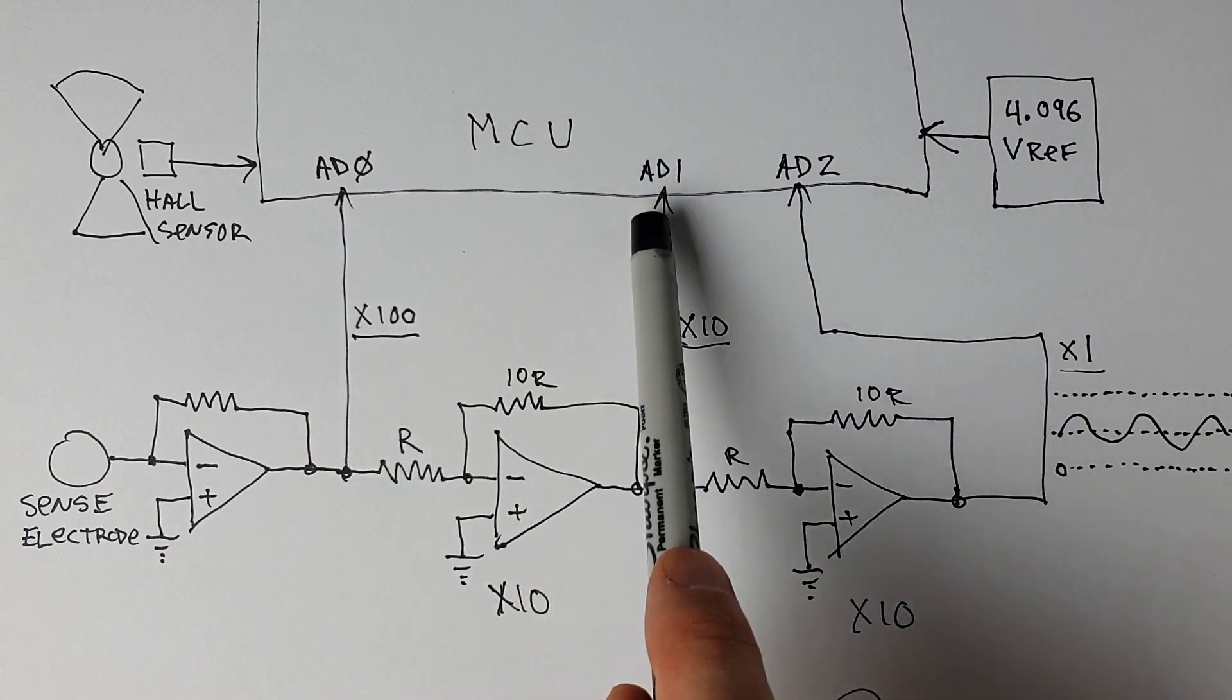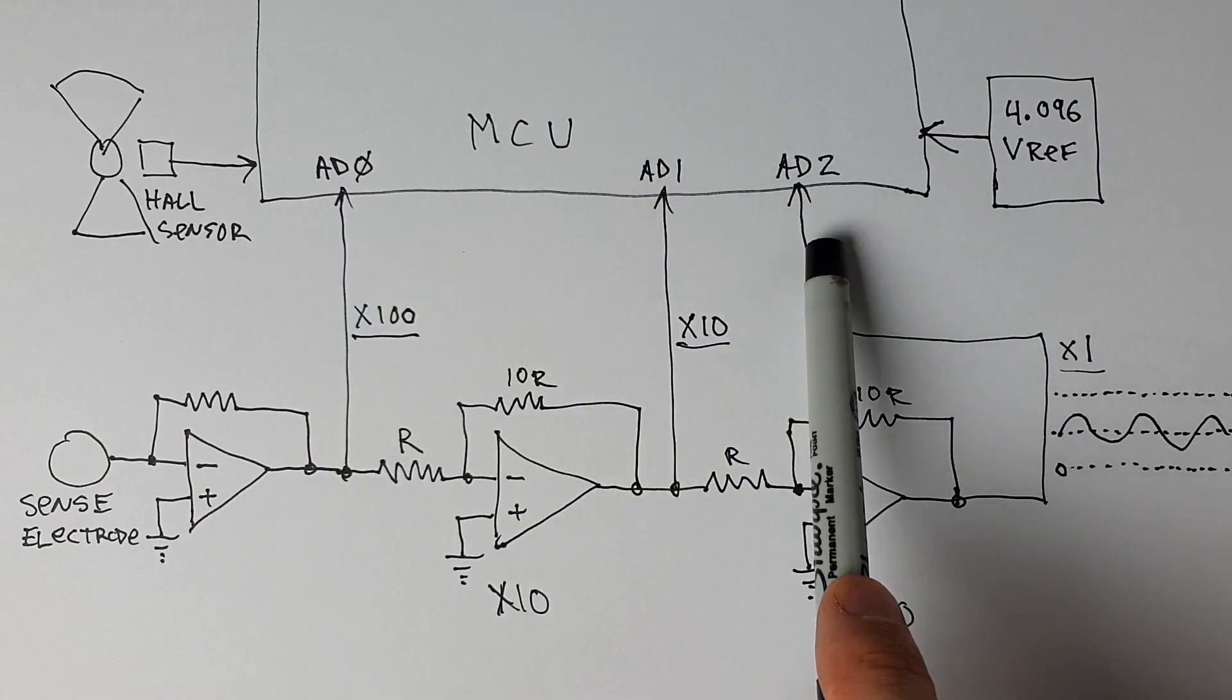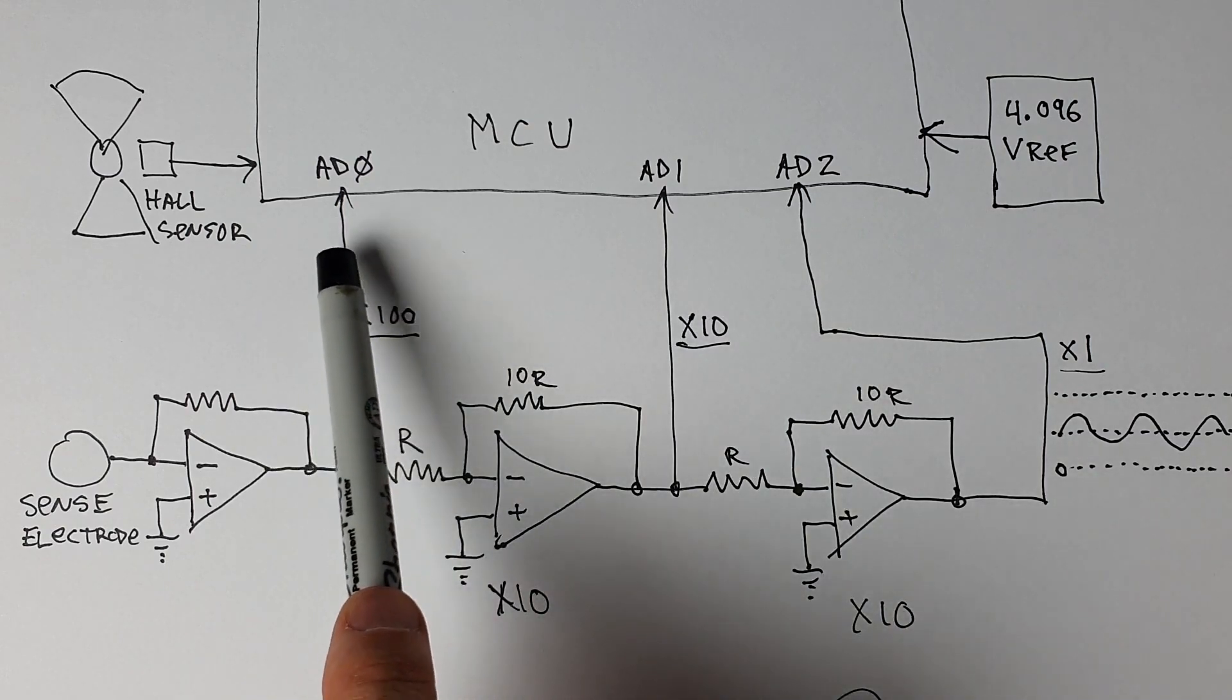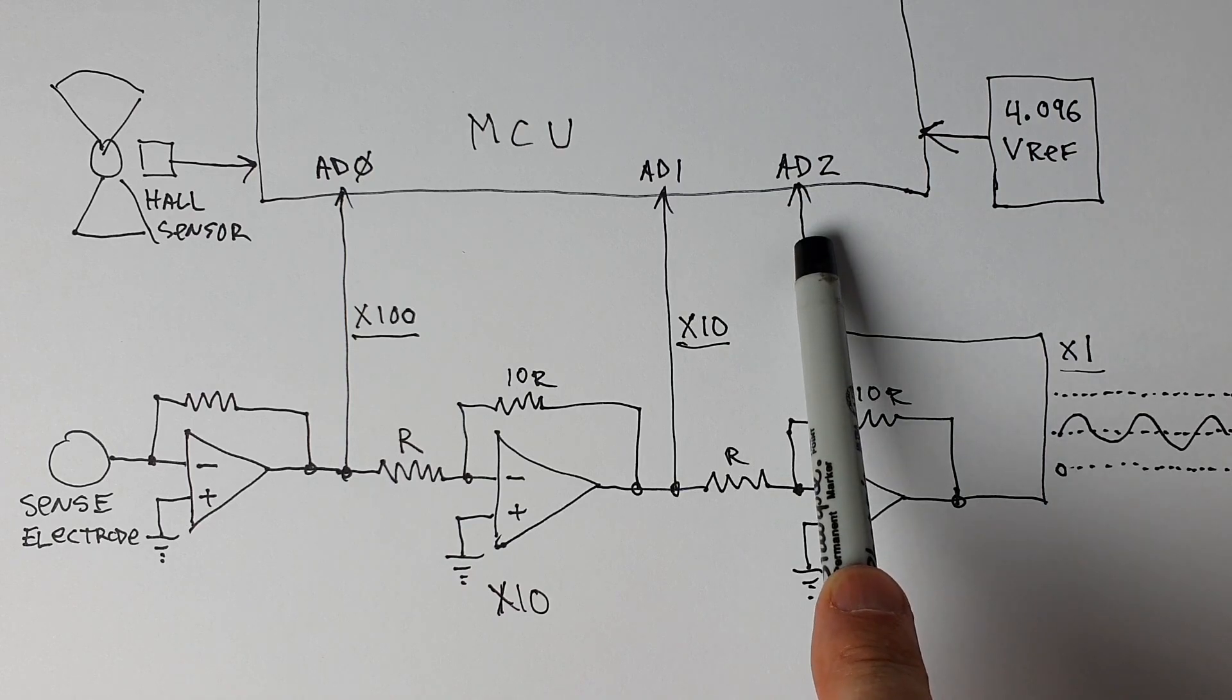Each one of these signals would be 10 times greater than the next. So for a given signal here, this one will be 10 times larger and this one will be 10 times larger.